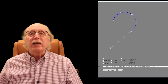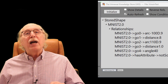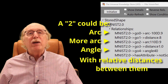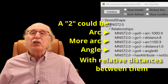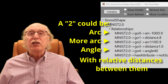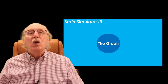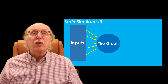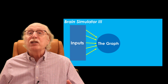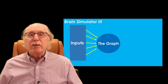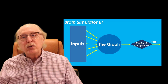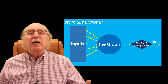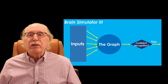How does it manage that? The key lies in the brain's graph structure. In this framework, each digit is linked to a set of visual exemplars. When a new input comes in, the brain looks for the closest match among its stored exemplars. If the match is good enough, the brain treats it as that version of the digit.